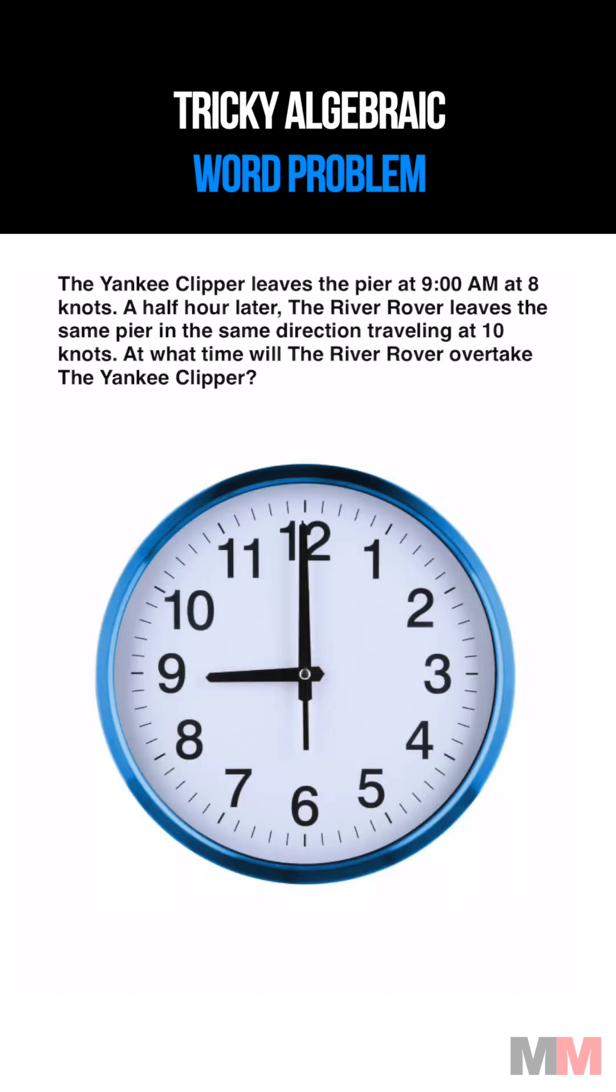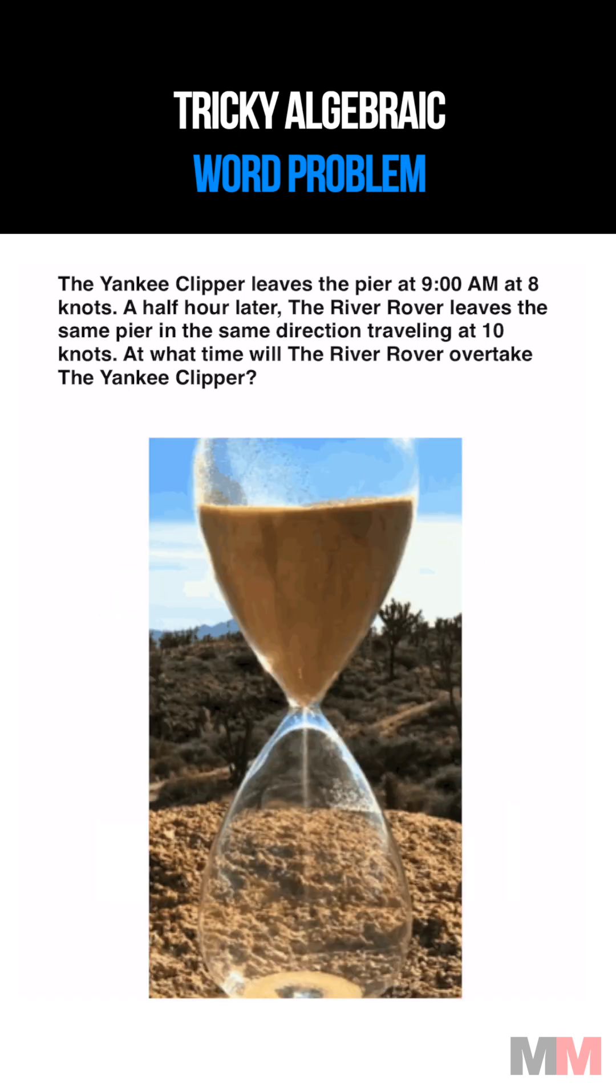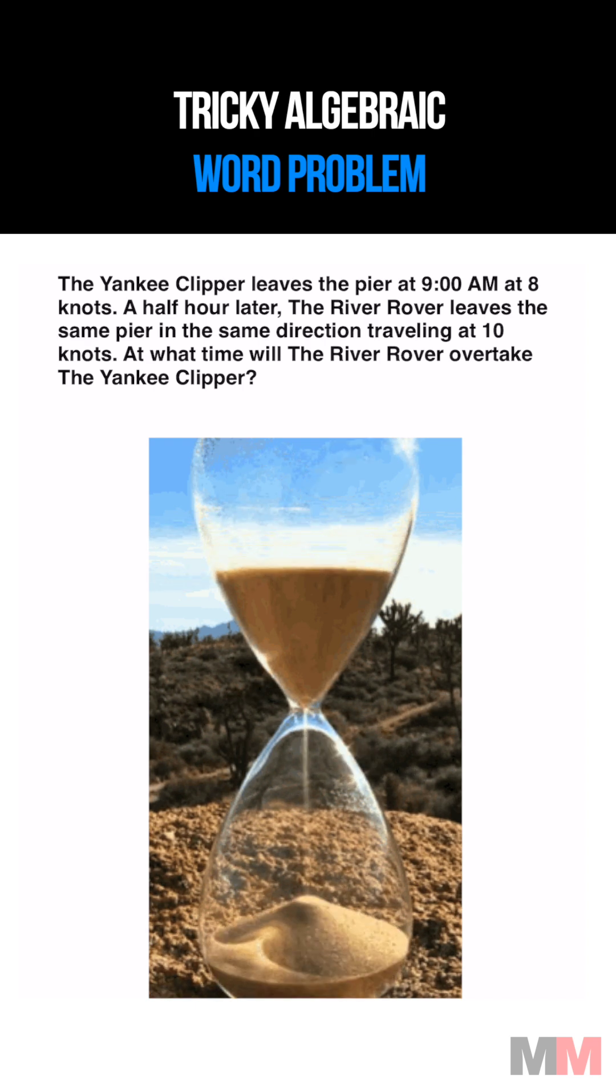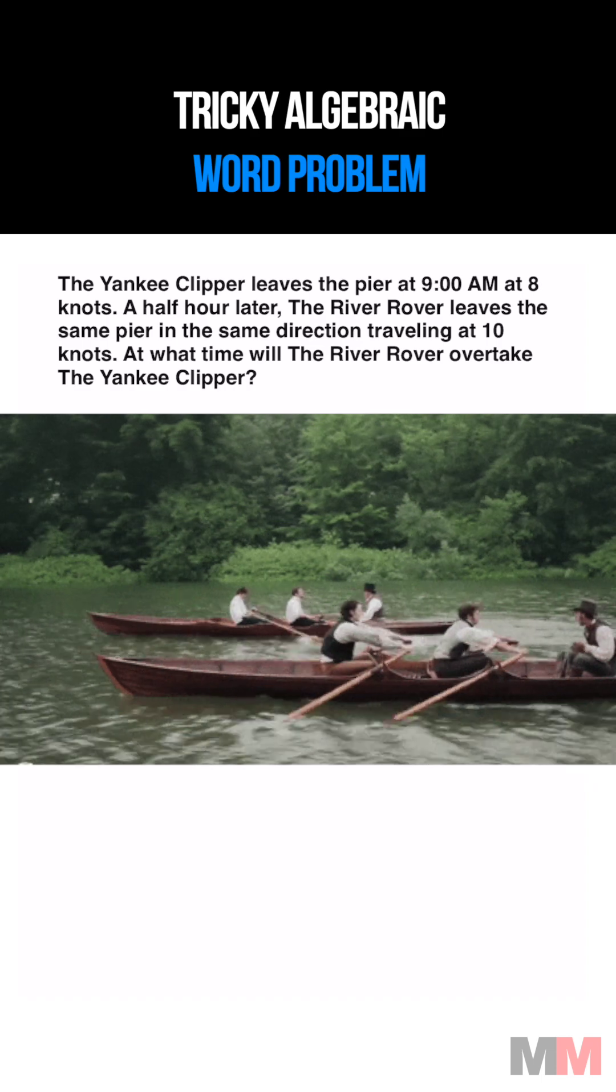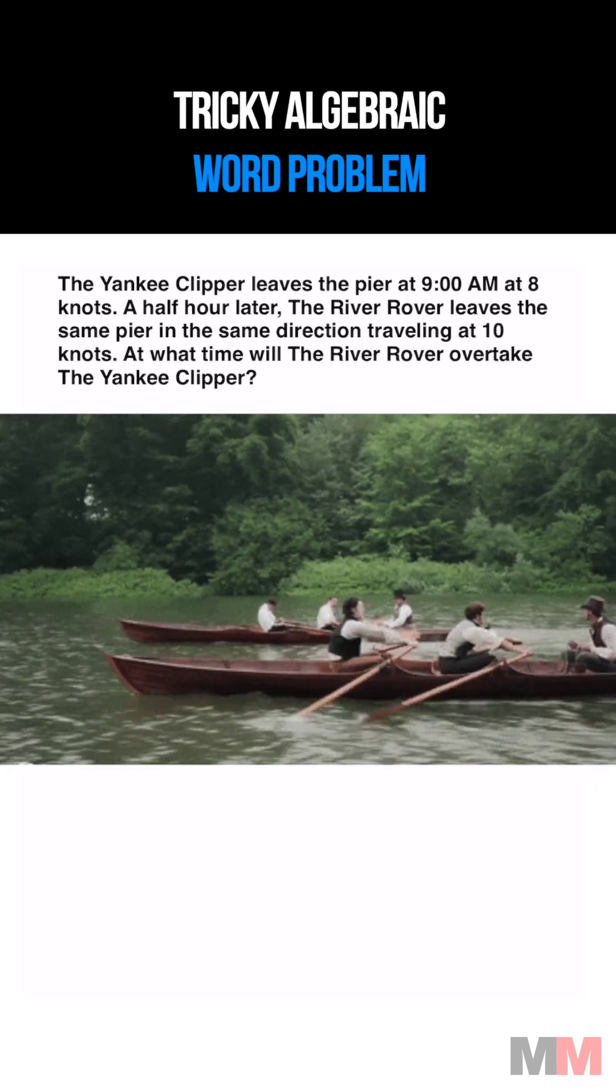The Yankee Clipper leaves the pier at 9 AM at 8 knots. A half hour later, the River Rover leaves the same pier in the same direction, traveling at 10 knots. At what time will the River Rover overtake the Yankee Clipper?